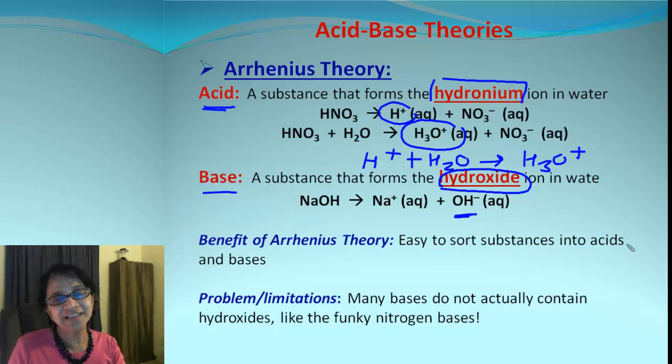Now there are some advantages of Arrhenius theory and there are some drawbacks and limitations. First of all, the theory is extremely simple and that's why we can easily identify acids and bases using this theory. What are the drawbacks? Some of the bases like those funky nitrogen bases like ammonia, they will be difficult to explain using Arrhenius theory.